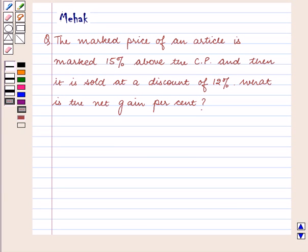Hello and welcome to the session. In this session we are going to discuss the following question: the marked price of an article is marked 15% above the cost price and then it is sold at a discount of 12%. What is the net gain percent?